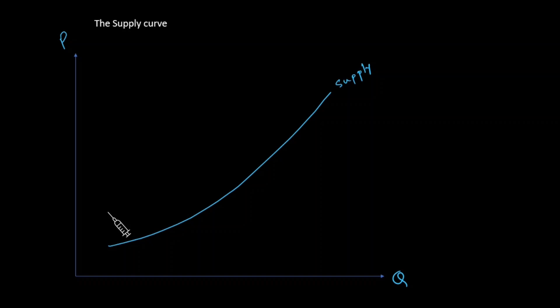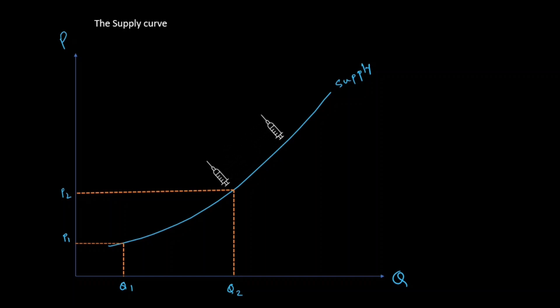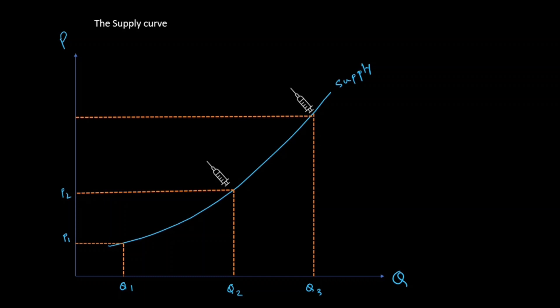Consider the supply of a particular vaccine as an example. Initially the product is at price p1, which is pretty low, and hence the quantity is also low at q1. Sliding along the supply curve upward, the quantity increases to q2 but with a higher price of p2. Sliding further, the quantity increases to q3 again with a higher price of p3. So as the quantity supplied increases, the price that the seller offers also increases, confirming that the supply curve is upward sloping.